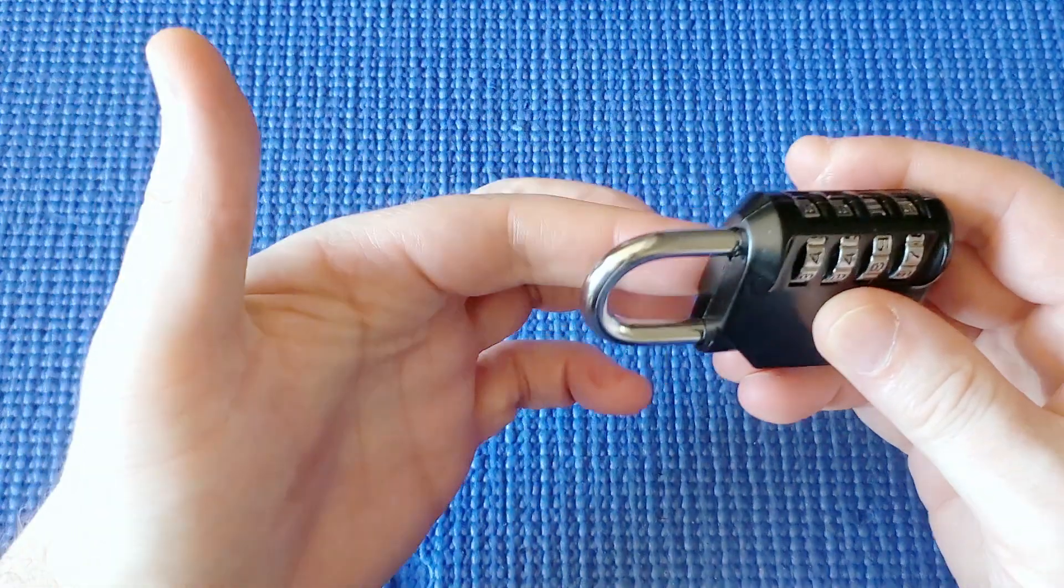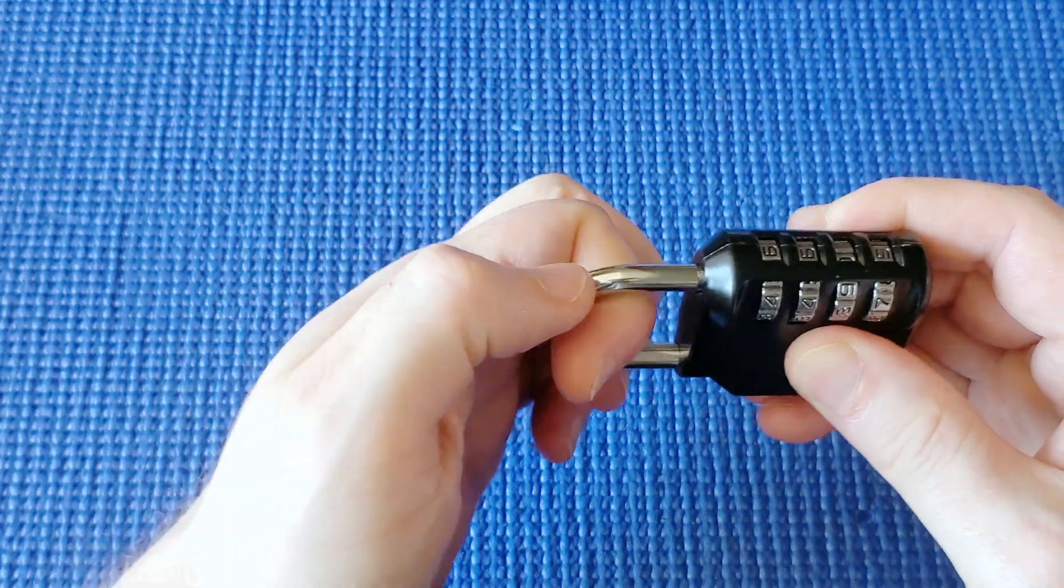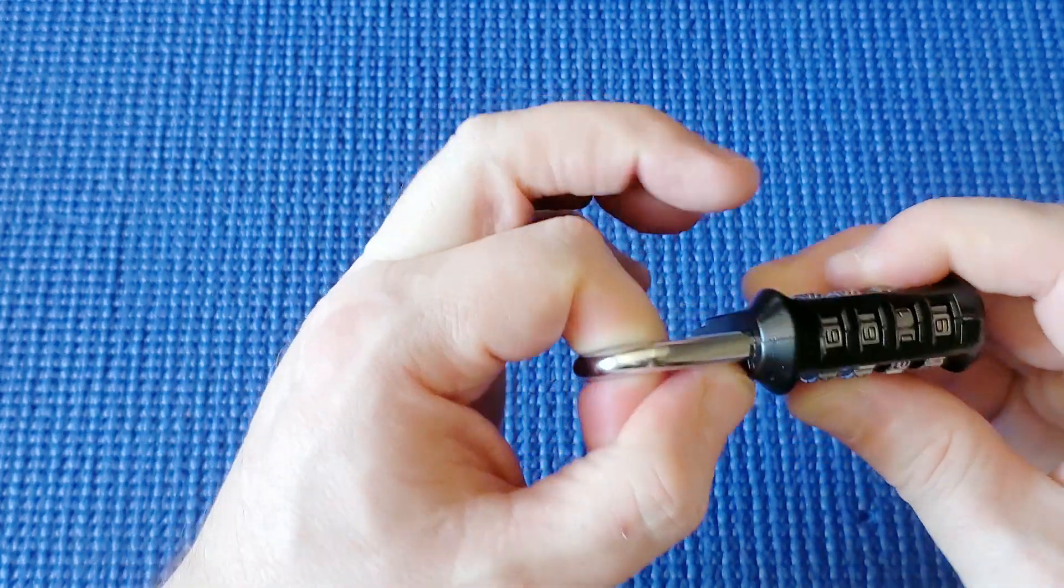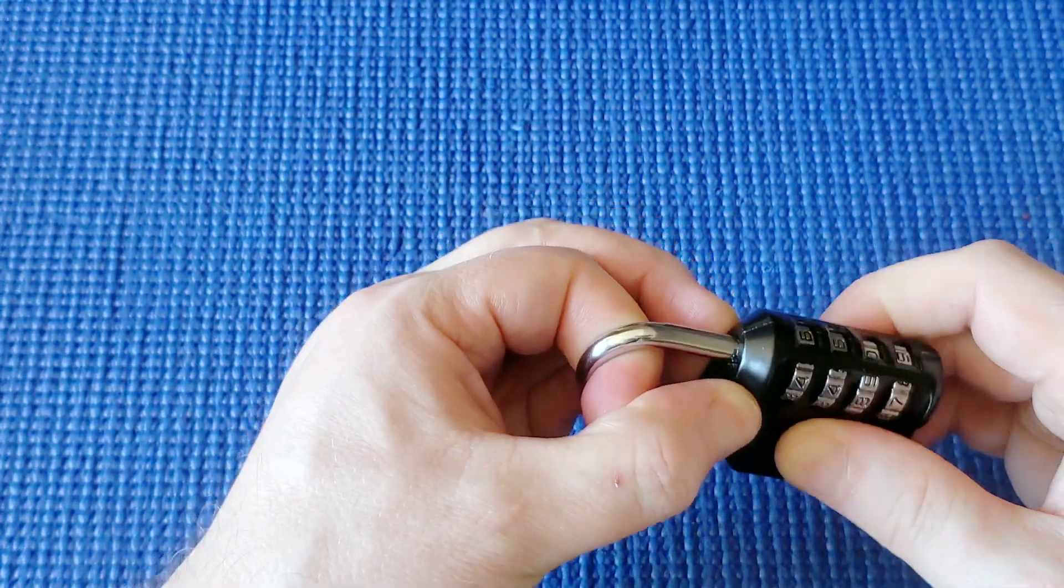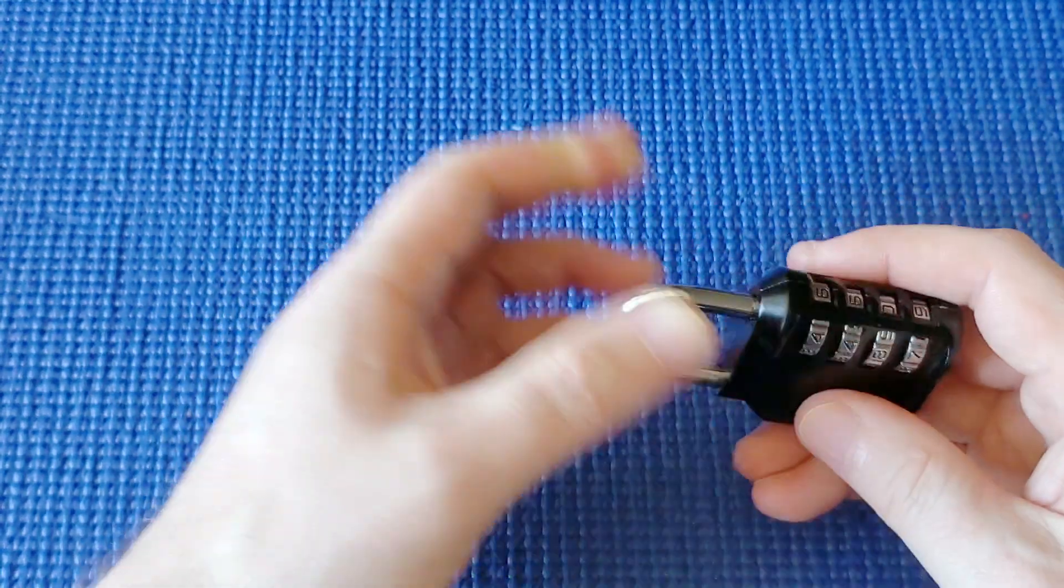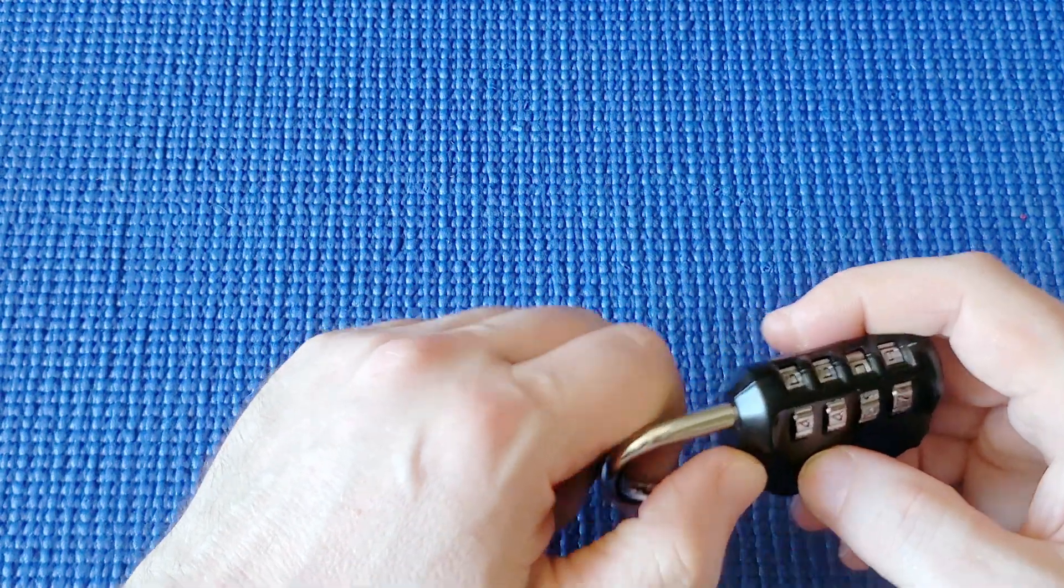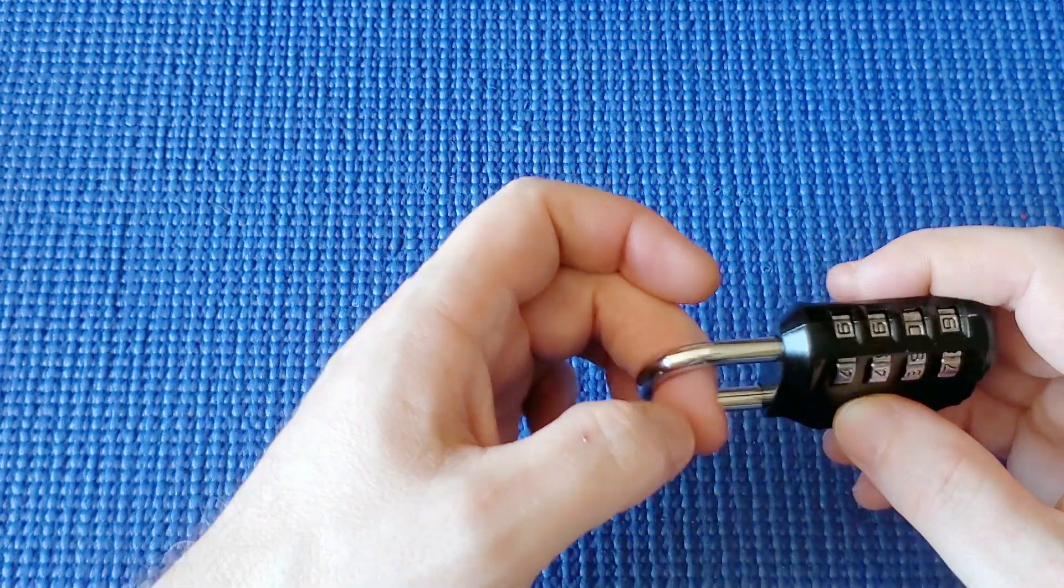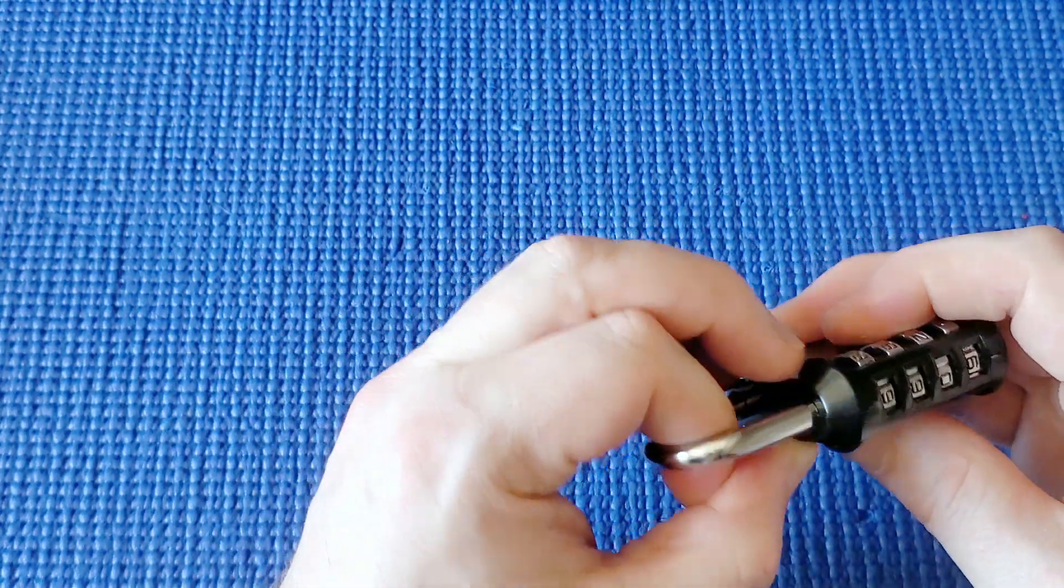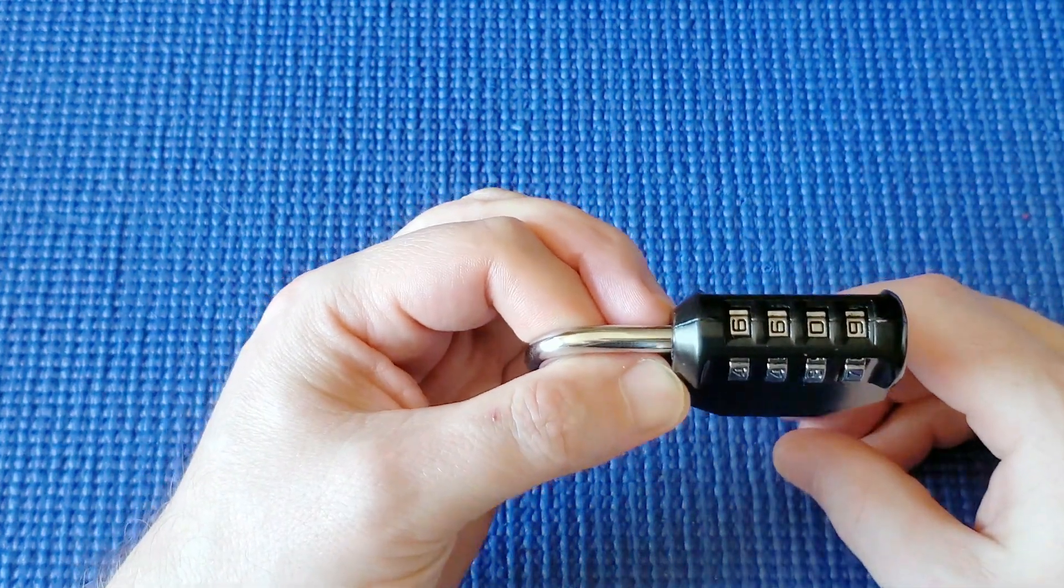What you do is you tension the shackle as if you're trying to pull it open. I often tension with this finger and put my thumb and these two fingers down here so that I can tension it with one hand. If you find that hard, you might be able to attach something to the shackle to try and help you pull it. The idea is I'm trying to tension this shackle with one hand so that I can have the other hand to turn the wheels.